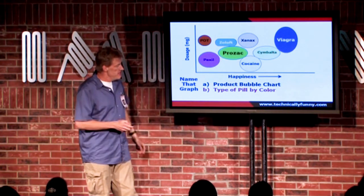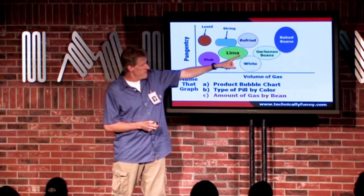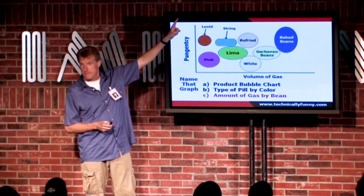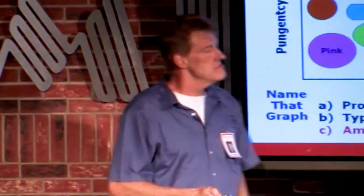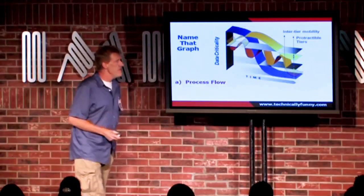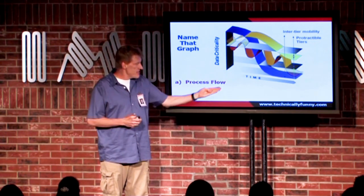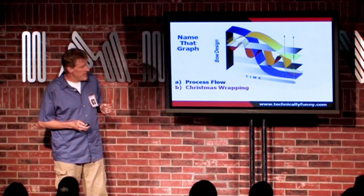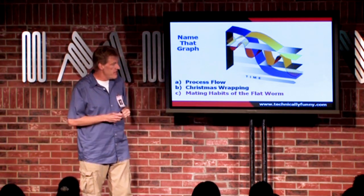Or is it C, amount of gas by bean — pink, white — volume of gas versus pungency? You know what I mean. This is a fun game. This is an actual chart — what the hell is going on here? That's actually a process flow chart from some company I worked for. Then there's B, that's Christmas wrapping. Or is it C, the emitting habits of flatworms?